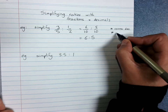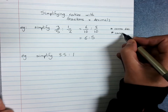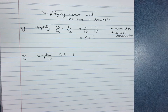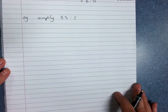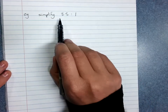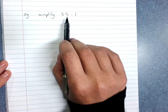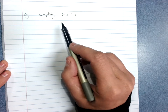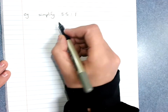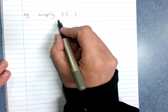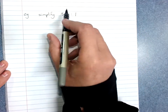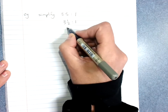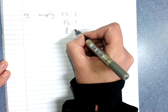Get a common denominator and then cancel the denominators. If you are simplifying and you've got a decimal, you can just change it to a fraction. For example, 3.5 would be 3 and a half — you'd want to change any mixed number to an improper fraction. So 3 and a half to 1 becomes 7 over 2 to 1.